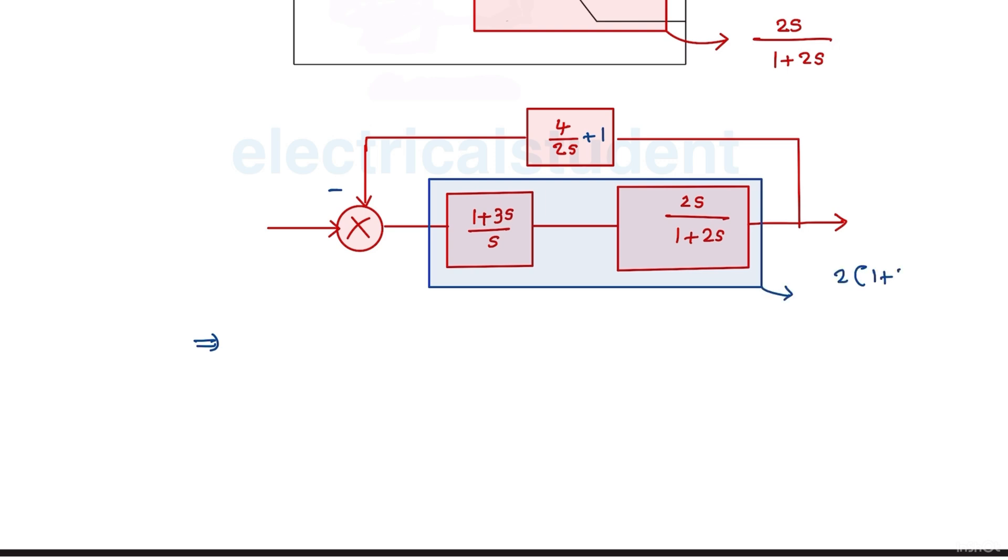So that is 2 times 1 plus 3s over 1 plus 2s. So the overall transfer function is now, because finally it is forming a feedback loop with this one.